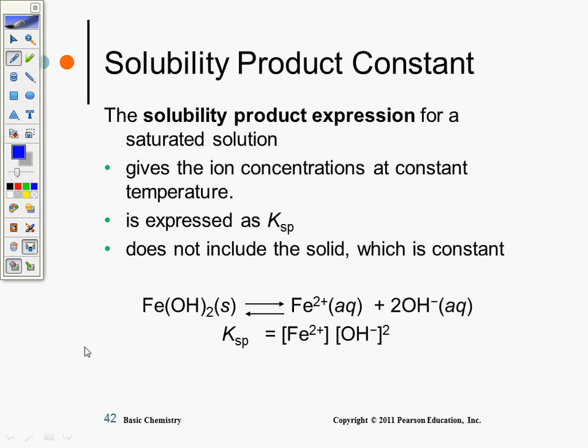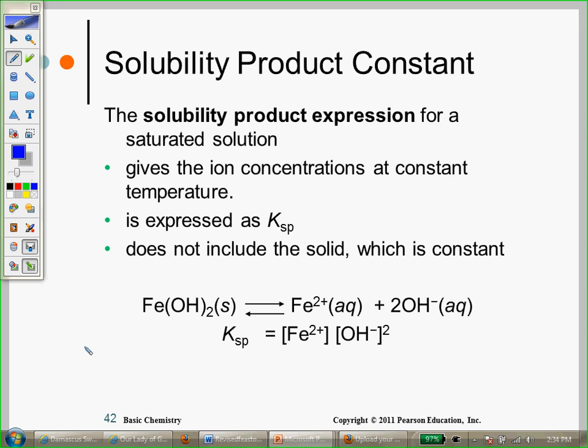The solubility product expression for a saturated solution gives you ion concentrations at constant temperature. However, it expresses Ksp, does not include the solid, which is constant. So now let me explain to you a little bit. Let's say that this Ksp value, or let's say the constant was 1.4 times 10 to the negative 6, or something like that, for FeOH2.